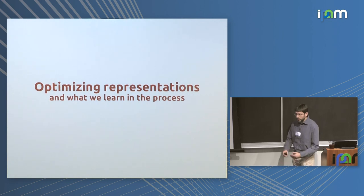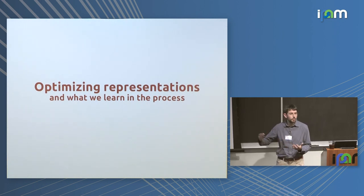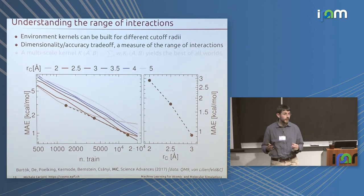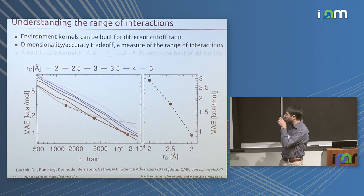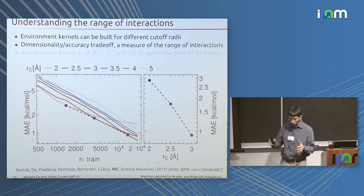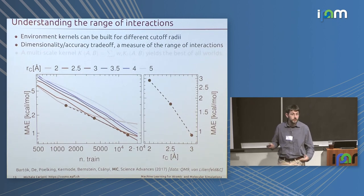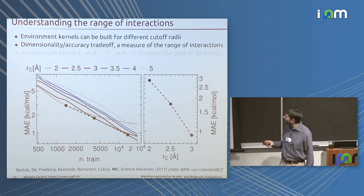So what can you do with these? How powerful are they, and with which accuracy? An important problem is determining what is the range of the interactions — the range of correlations included in your representation. You can build several representations based on truncating local environments at different length scales: 2 Ångström, 2.5 Ångström, and so on. We then build learning curves for predicting the atomization energy of the QM9 dataset, which has been the golden benchmark for this community for several years.